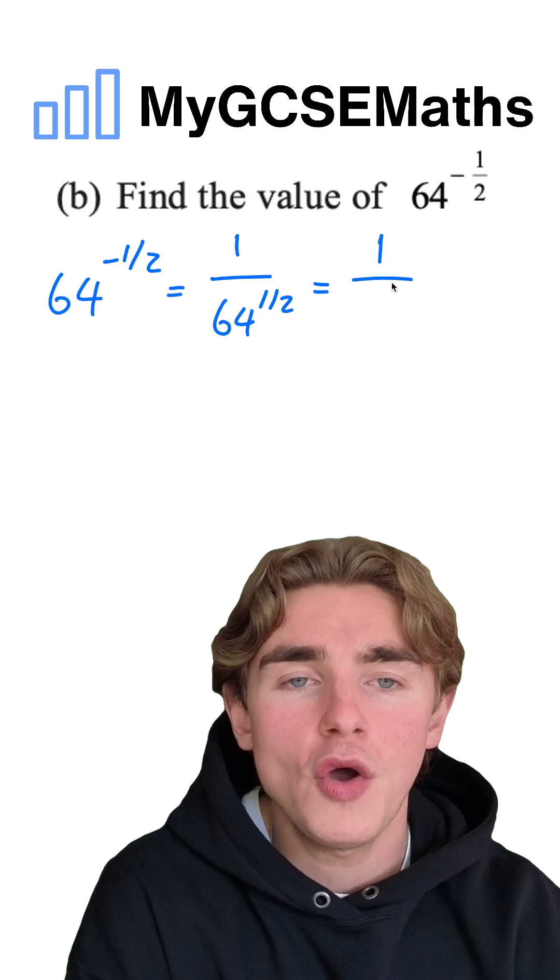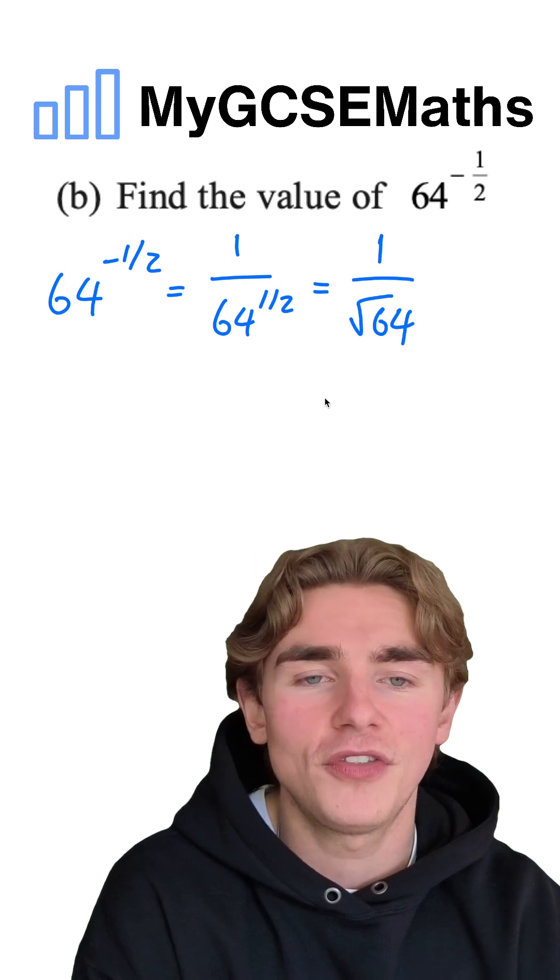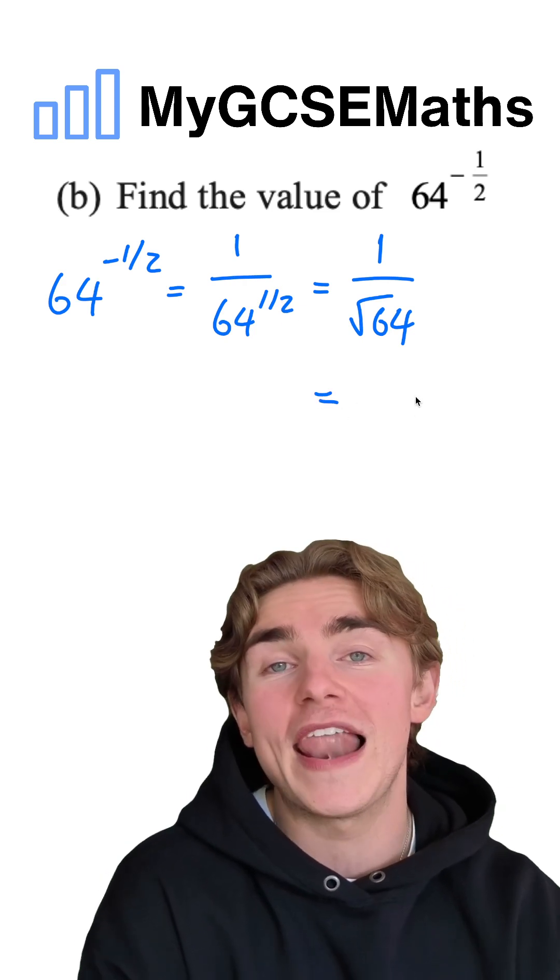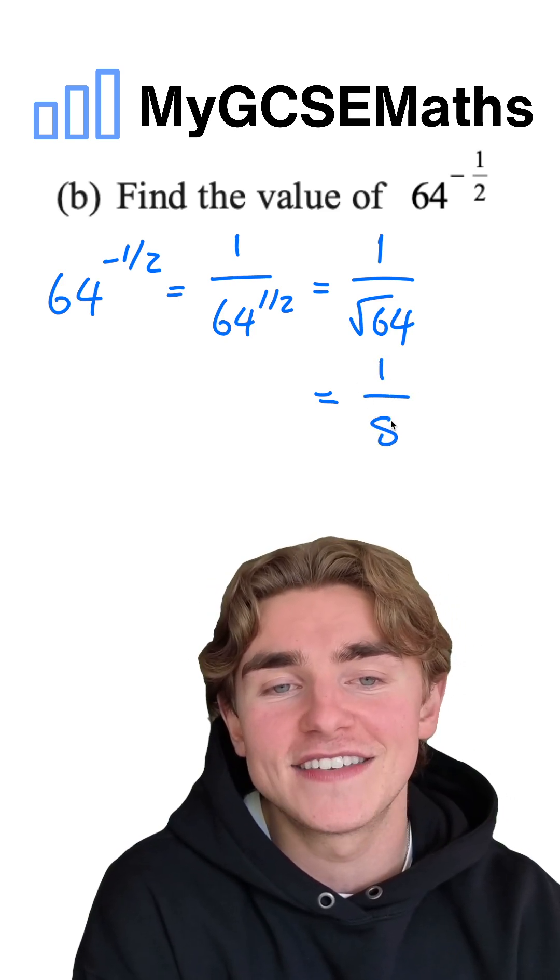So we just have one over the square root of 64, and it's the square root because we have the two on the bottom. What's the square root of 64? Eight times by eight is 64. So we're going to have one over eight as our answer.